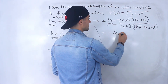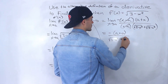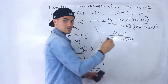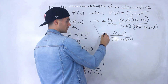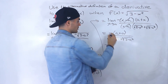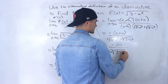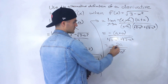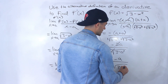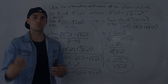Now we can plug in a for all the x values. We're left with negative times a plus a, all over square root of 3 minus a squared plus square root of 3 minus a squared. Those are like terms under the square root, so we add the coefficients: a plus a is 2a, giving negative 2a over 2 times the square root of 3 minus a squared. The 2's cancel, leaving negative a over the square root of 3 minus a squared — exactly the same derivative we got with the original definition.